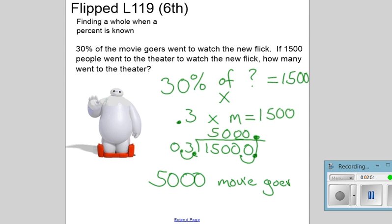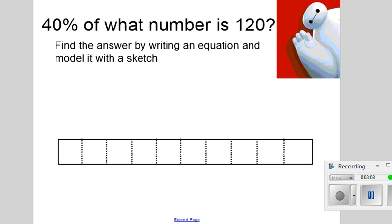3 goes into 15,000 five thousand times. Through this operation we have determined that 5000 moviegoers went to the theater. This process is not a new process, just a different method of solving to find the whole number instead of finding one of our different problems. Let's try another one.